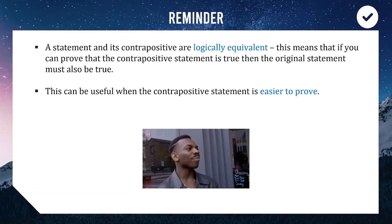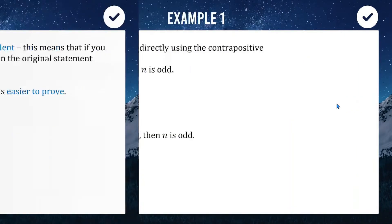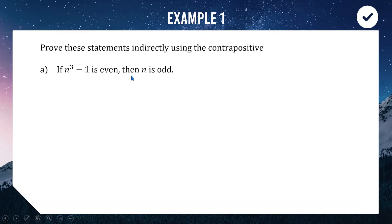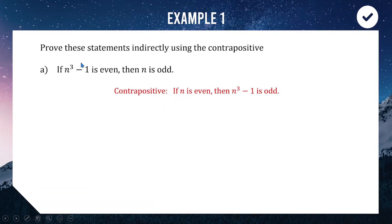For today we're going to be taking statements that seem difficult to prove, writing the contrapositive statement, and then proving that instead. This concept is called proof by contrapositive. Our first example: if n³ − 1 is even, then n is odd. You know you're going to use a contrapositive proof when the first part of the statement is the more complicated part. We like to start with a simple part and work toward the complicated part. So first we write the contrapositive: if n is even, then n³ − 1 is odd.